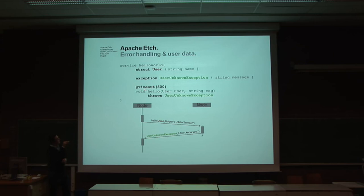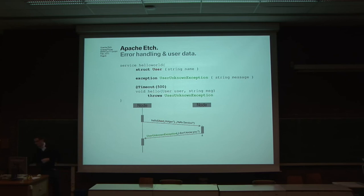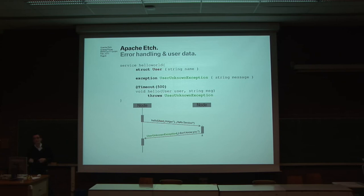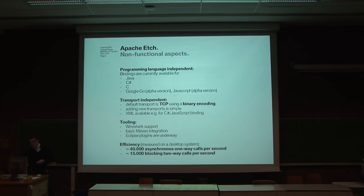You can also annotate your services with timing constraints — for example, specifying that a Hello method must answer within a time bound of 500 milliseconds, otherwise a timeout exception is thrown. This is generally what Edge does on the network description layer. This IDL is compiled by the Edge compiler, and you get code generated for various languages — for example, C#, Java, and Google Go. There are also early-stage implementations for Python and other languages.